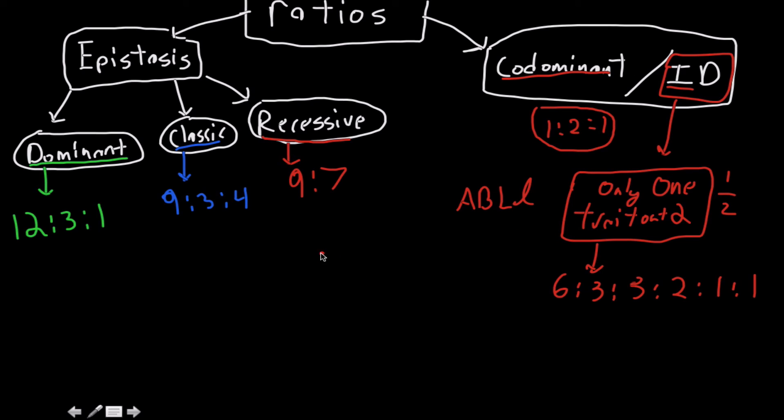So one other thing, and remember, I consider gene interaction to be a branch of epistasis, but for gene interactions, these are all variations of the independent assortment 9 to 3, 3 to 1. All of these are variations of that.